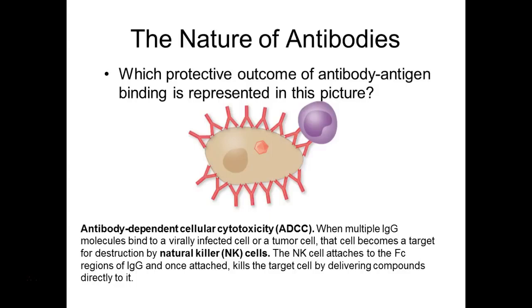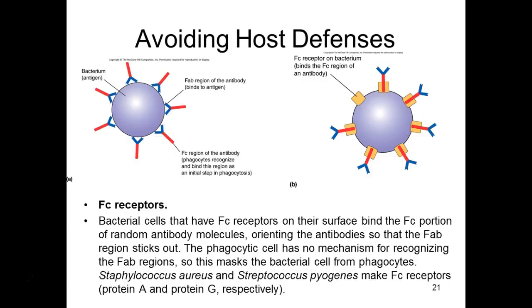This also happens with hemolytic disease of the newborn. If your baby is RH positive and you're RH negative, you get exposed to positive blood and make antibodies against it. Unfortunately, this class of antibody — IgG — crosses the placenta. When it crosses, it can bind to the baby's red blood cells, and the baby's natural killer cells will attach to those antibodies and kill the baby's own red blood cells.